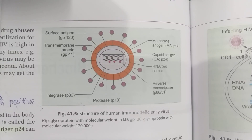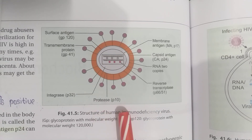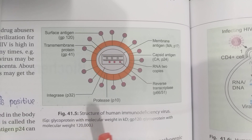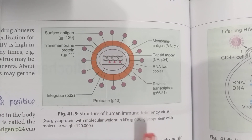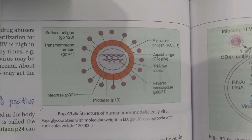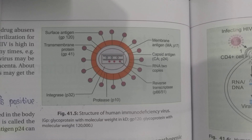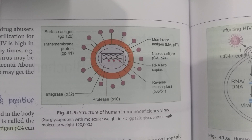Protein components are named according to their molecular weight — for example, p10 indicates a molecular weight of 10,000 Da. The core of the virus contains the reverse transcriptase, an endonuclease/integrase (p32), the nuclear capsid protein, and a protease (p10).